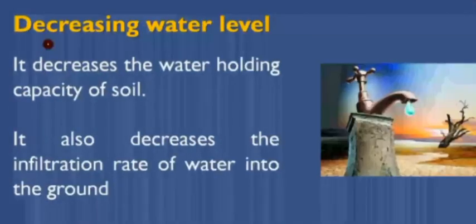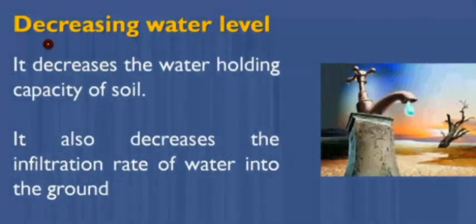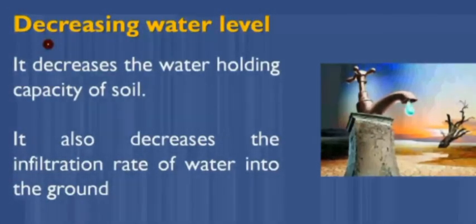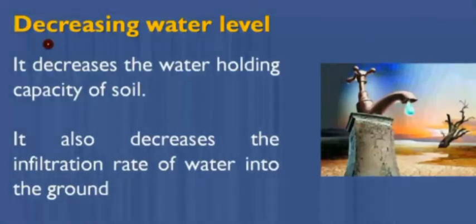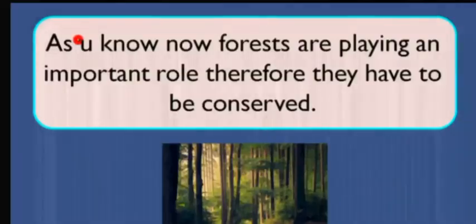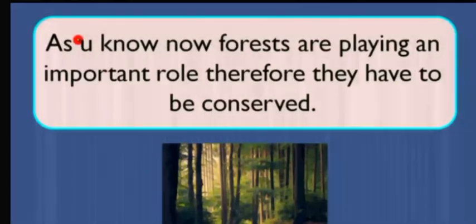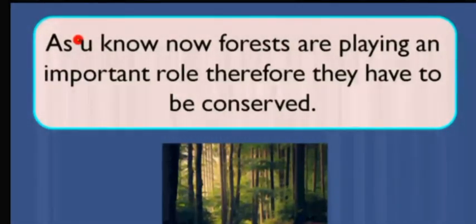The last consequence is decreasing water level — deforestation decreases the water holding capacity of soil and also decreases the infiltration rate of water into the ground. To overcome all these problems, we must conserve forests. Both plants and animals are important, and forests play an important role, therefore they have to be conserved.